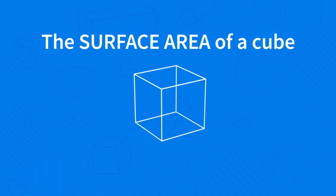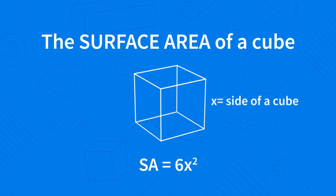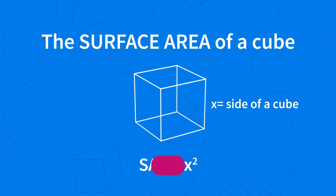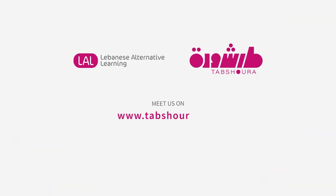So that's how you can calculate the surface area of a cube. It's 6x squared, where x is the side length of the cube.